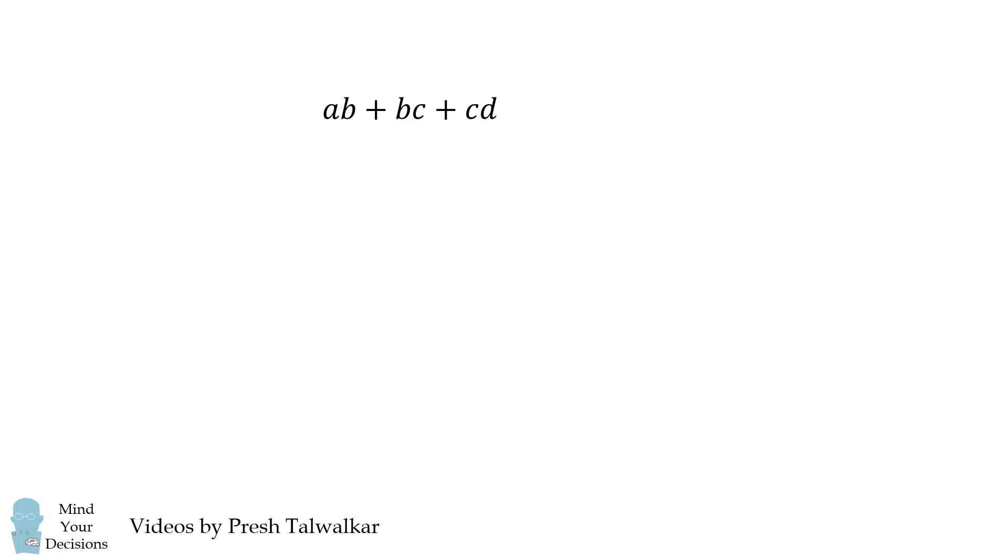So how are we even supposed to maximize the quantity AB plus BC plus CD? It seems like such an abstract thing. Why would anyone want to maximize this? To get a better sense of what this sum is, let's use an area model.